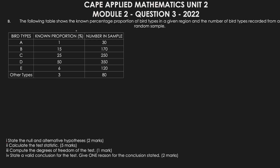In this particular question, the following table shows the known percentage proportion of bird types in a given region and the number of bird types recorded from a random sample. From this question alone, we already know this is a chi-square test, because we are comparing a known percentage proportion to actual observed sample values.